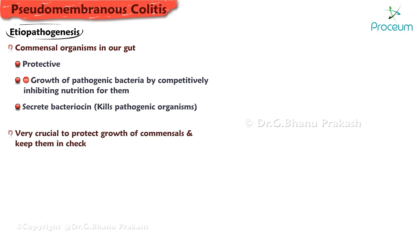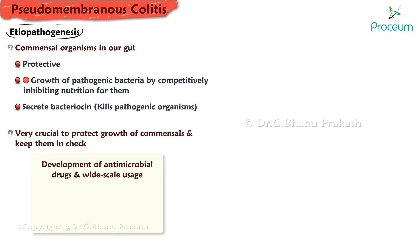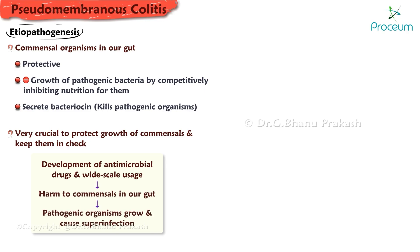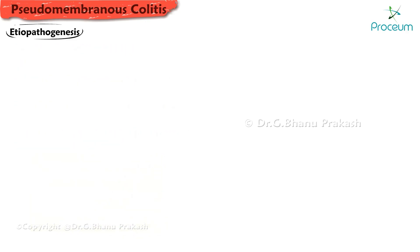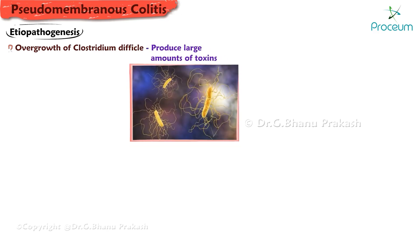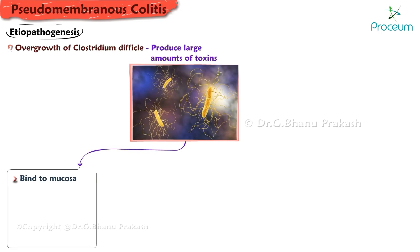It is crucial to protect the growth of commensals. However, the enormous number of antimicrobial drugs and their wide-scale usage across the globe has resulted in harm to the commensals in our gut, opening ways for pathogenic organisms to grow and cause superinfection — specifically overgrowth of Clostridium difficile — resulting in the production of large amounts of toxins.